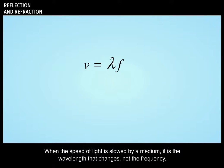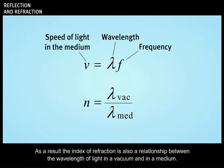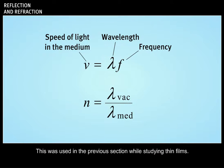When the speed of light is slowed by a medium, it is the wavelength that changes, not the frequency. As a result, the index of refraction is also a relationship between the wavelength of light in the vacuum and in the medium. This was used in the previous section while studying thin films.